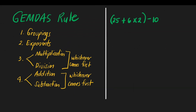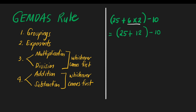Next example. Do we have groupings? Yes, we have. Inside the groupings we have addition and subtraction. Which do we do first — add or multiply? Based on the GEMDAS rule, we need to do multiplication first, then addition after. We copy the parentheses and the 25, and do 6 times 2 equals 12, then copy the 10. Next, we do what's inside the parentheses: 25 plus 12. 5 plus 2 is 7, 2 plus 1 is 3, so this is 37. Then subtract 10: 37 minus 10 equals 27. That is our answer.